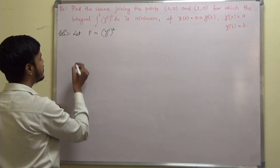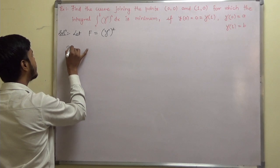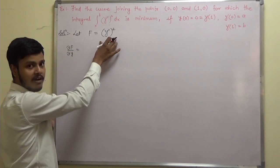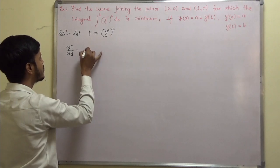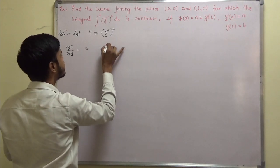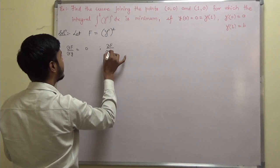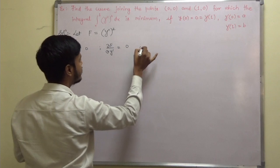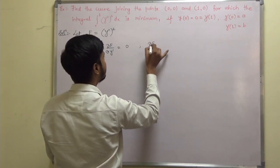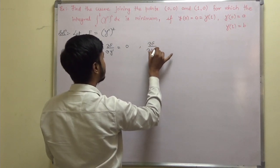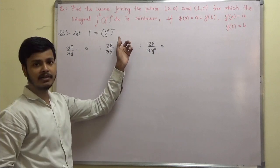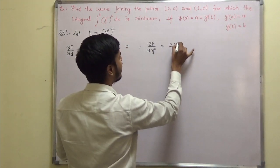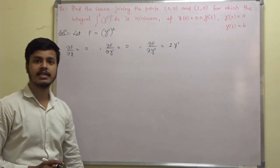Now we find the partial derivatives. ∂f/∂y: is there a term in y? No, so it is 0. ∂f/∂y': is there a term in y'? No, so again the derivative is 0. Then ∂f/∂y'': is there a term in y''? Yes, so its derivative is 2y''.